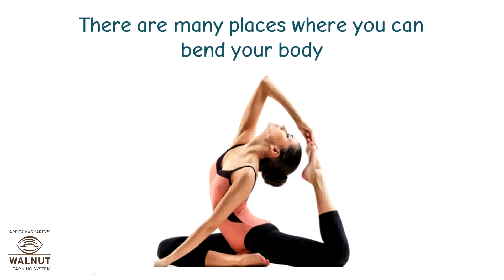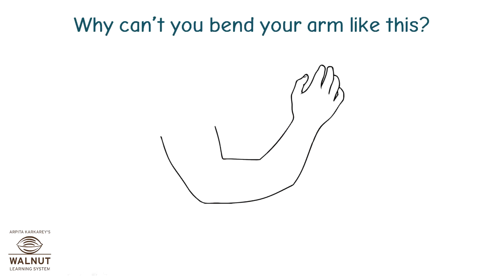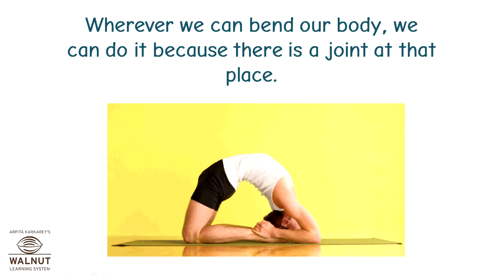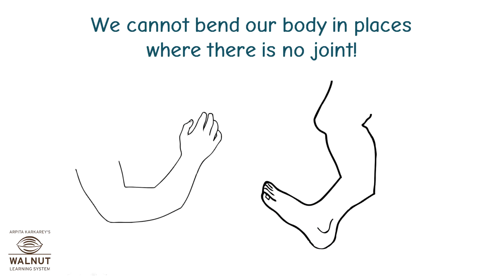There are many places where you can bend your body. Why can't you bend your arm in the middle of the forearm? There is no joint there. Why can't you bend your leg in the middle of the shin? There is no joint there. Wherever we can bend our body, we can do it because there is a joint at that place. We cannot bend our body in places where there is no joint.